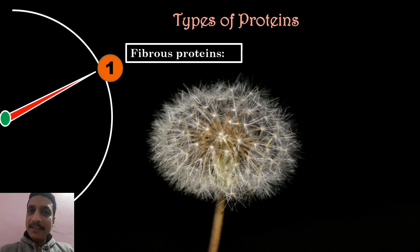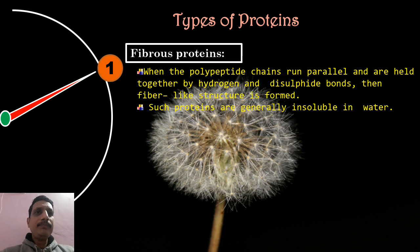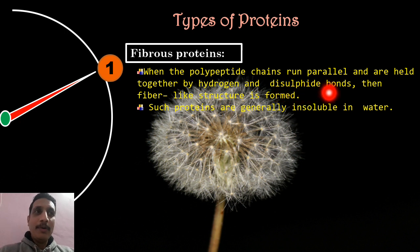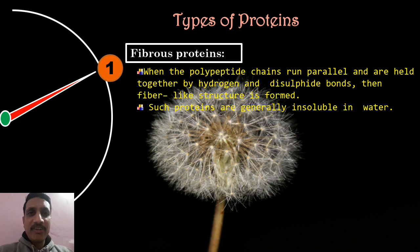Types of protein. First type: fibrous protein. The name itself tells about this protein. When the polypeptide chains run parallel and are held together by hydrogen bonds or disulfide bonds, a fiber-like structure is formed — that is called fibrous protein. These fibrous proteins are insoluble in water.